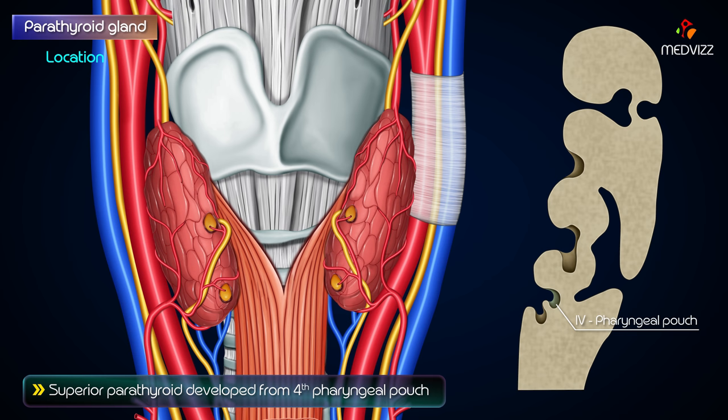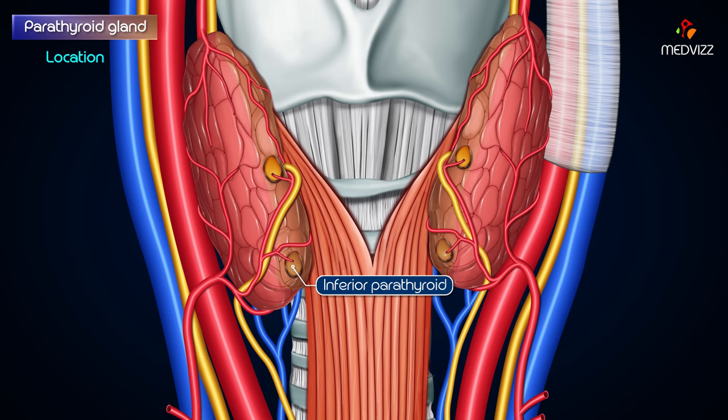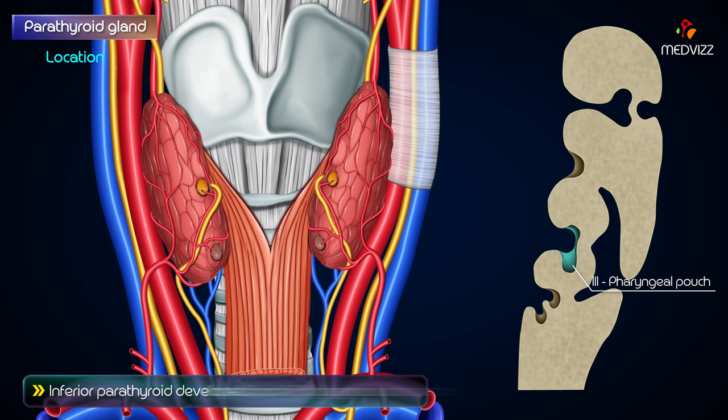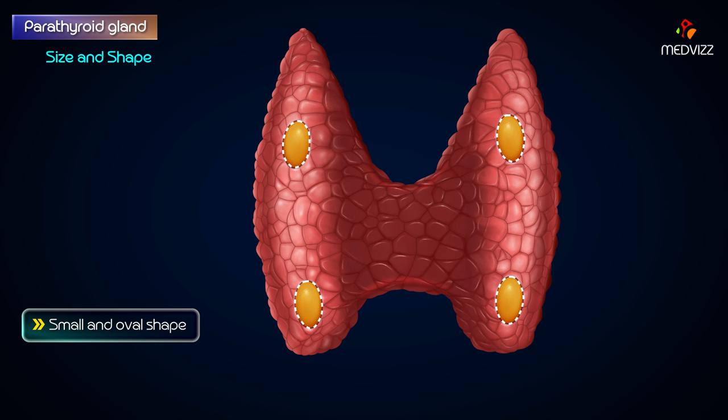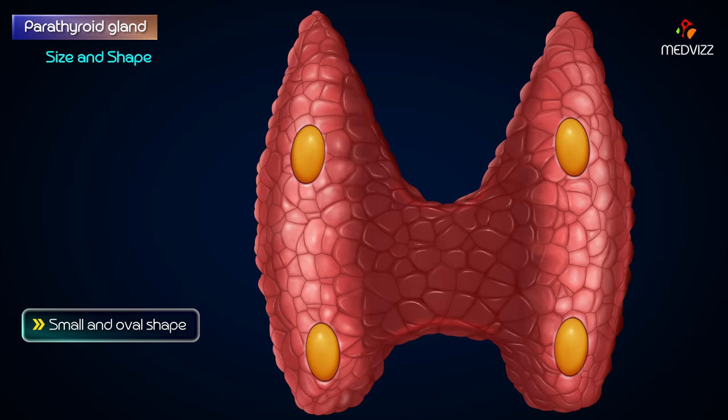The superior parathyroid develops from the fourth pharyngeal pouch and hence is also termed parathyroid 4. The inferior parathyroid lies on the posterior border of the thyroid lobe near its lower pole, below the inferior thyroid artery. It develops from the third pharyngeal pouch and is hence also termed parathyroid 3. They are small oval or lentiform in shape.